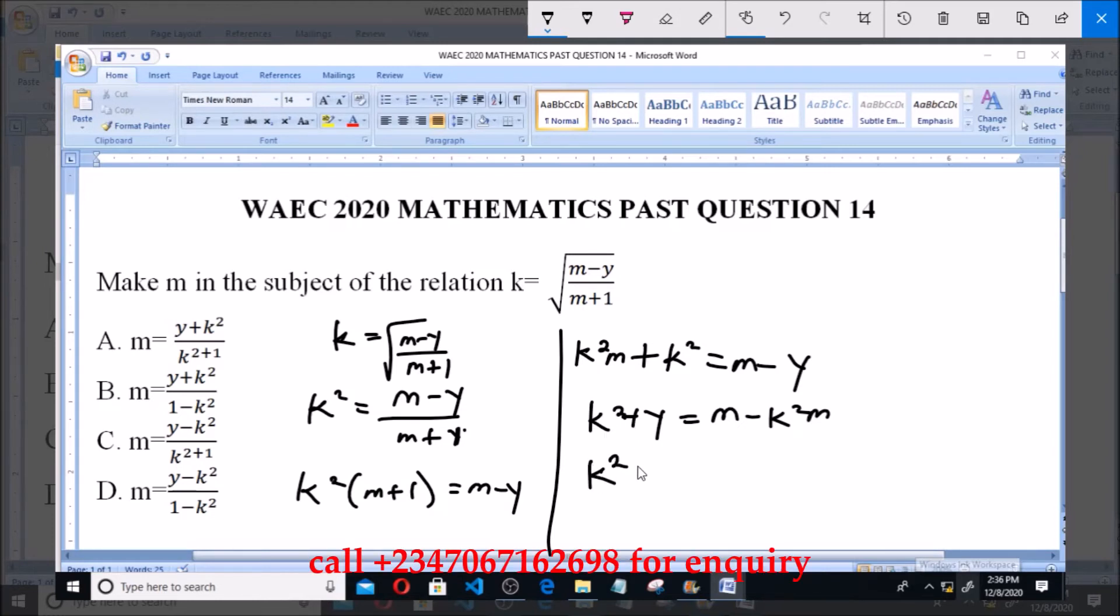So now from here we have k squared plus y equals m times (1 minus k squared).